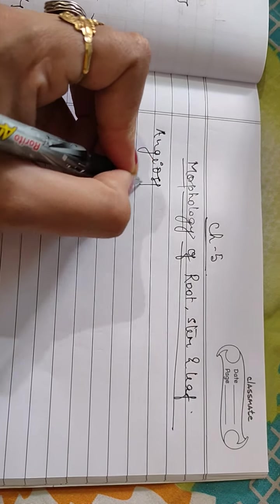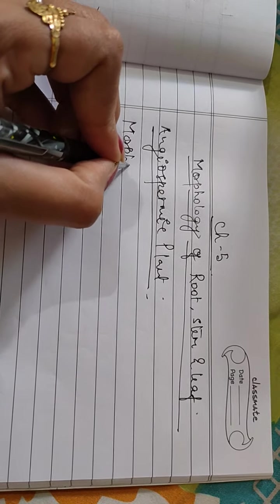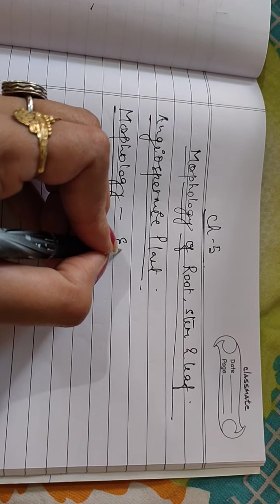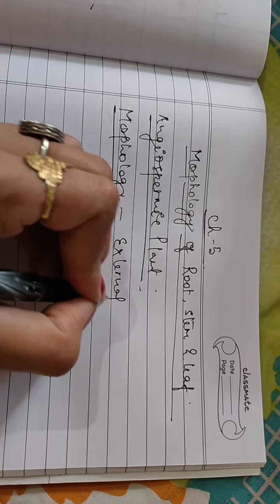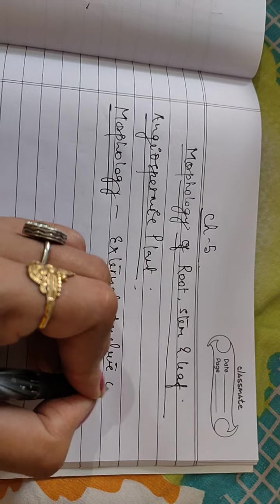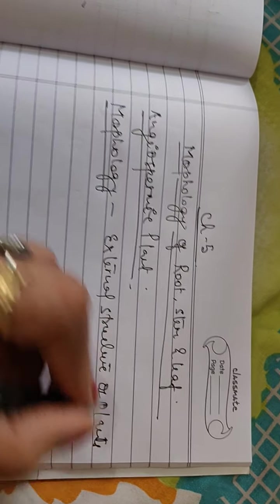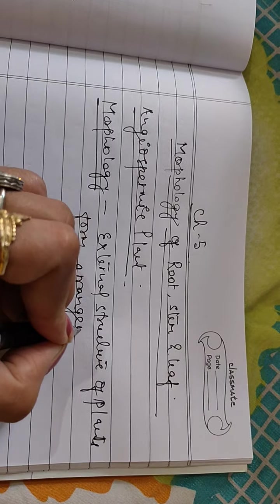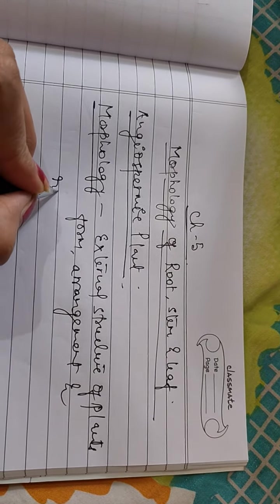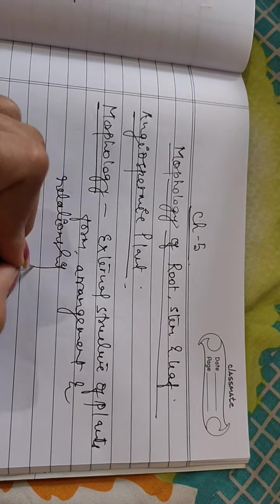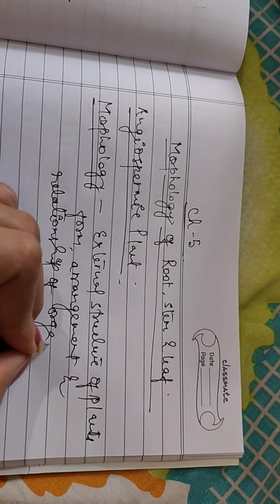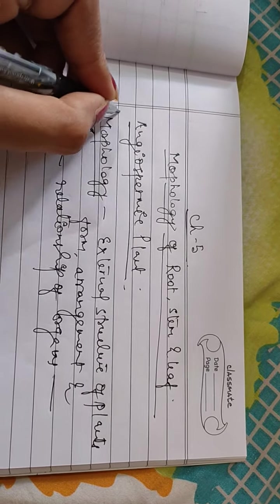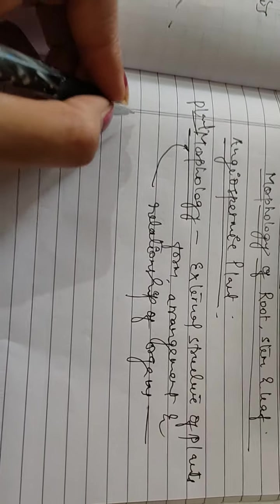First, what is the meaning of morphology? Morphology means the external appearance or external structure of plants — their form, arrangement, and relationship of organs. It is called plant morphology.